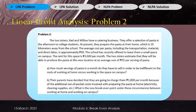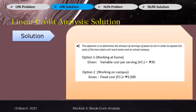For the solution, Letter A: the objective is to determine the number of servings of pasta to sell to equate costs between working at home and on campus. For Option 1, working at home, the variable cost per serving VC sub 1 equals 30 pesos, because transportation, material, and direct labor cost approximately 30 pesos — all included in variable cost. For Option 2, working on campus, the fixed cost FC sub 2 equals 3,500 pesos, taken from the monthly rent of 3,500 pesos, which is a fixed cost.